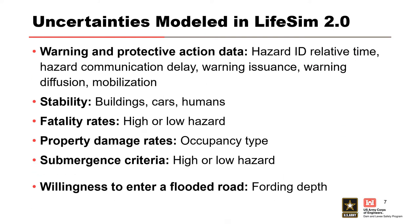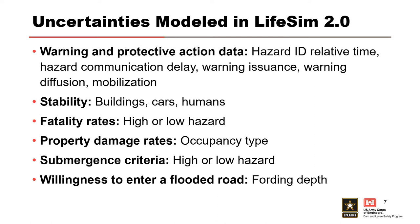There are also warning and protective action parameters with a lot of natural variability. We can do things to hone in on these — talking to emergency managers, conducting elicitations, understanding the preparedness and risk perception of the community. All of that is helpful in reducing uncertainty in these parameters. But no matter how much we reduce it, there's still natural variability in how many people will receive the warning, how many will take action, and how many will attempt to act but find it's too late.